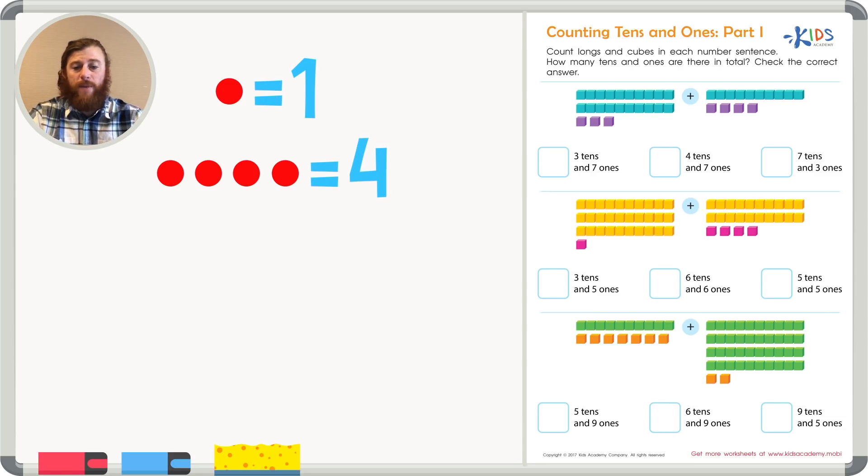The other base 10 block we're going to be looking at is called the long, or a 10. A long is made up of 10 individual cubes. Therefore, a long, or a 10, equals 10.